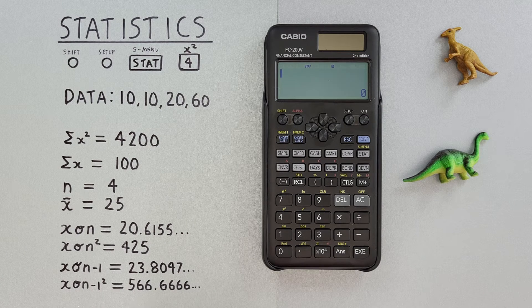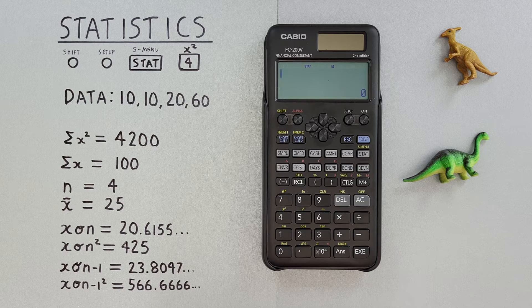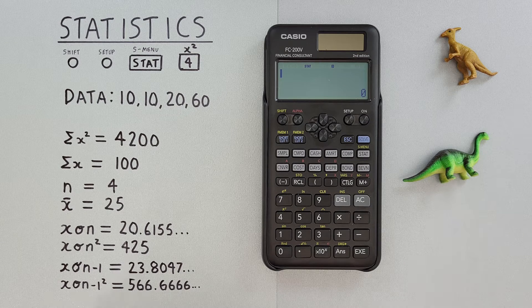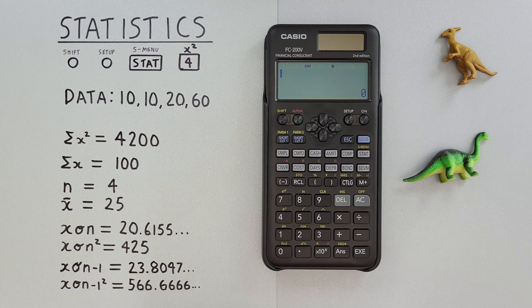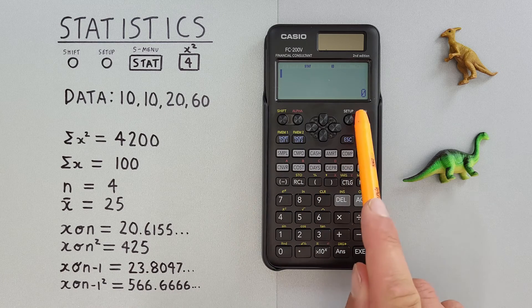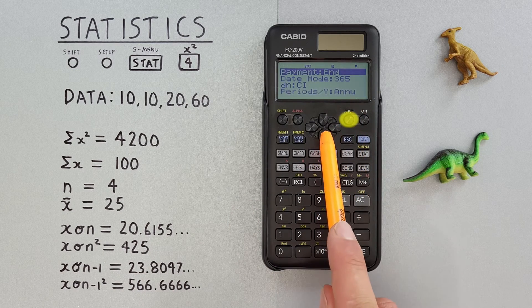If we have a large dataset with the same number occurring multiple times, we can use the frequency list to make entering our data easier. To do that, we press the setup key and then scroll down.